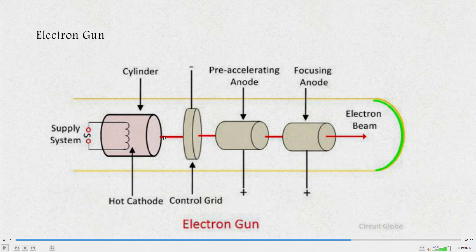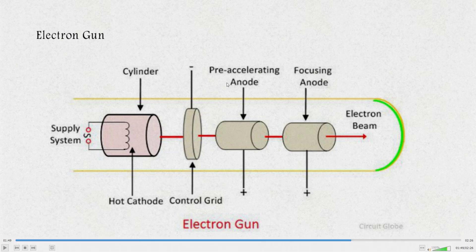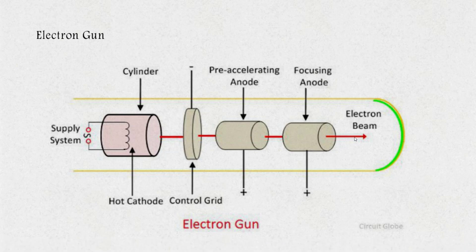These electrons then pass through the control grid. The control grid is made up of nickel and it controls the number of electrons passing through it. The pre-accelerating anode and focusing anode further accelerate the electrons and focus the electron beam onto the CRT screen.